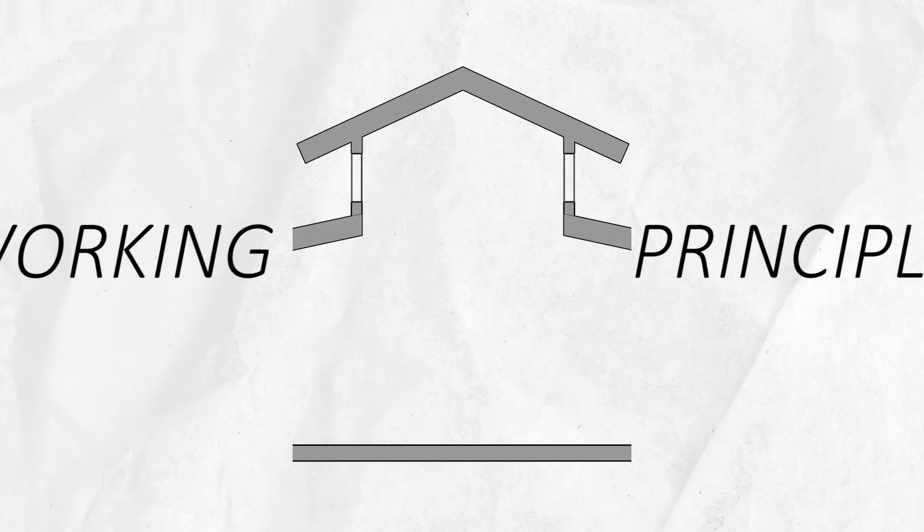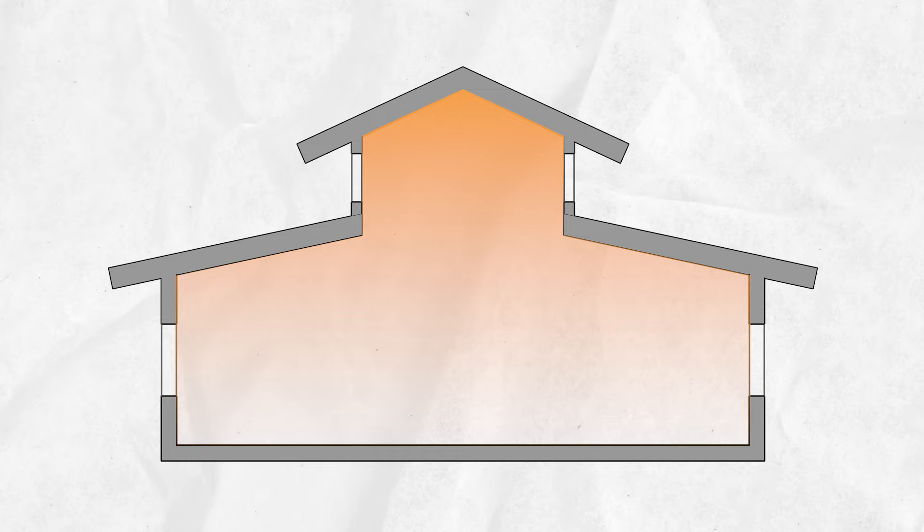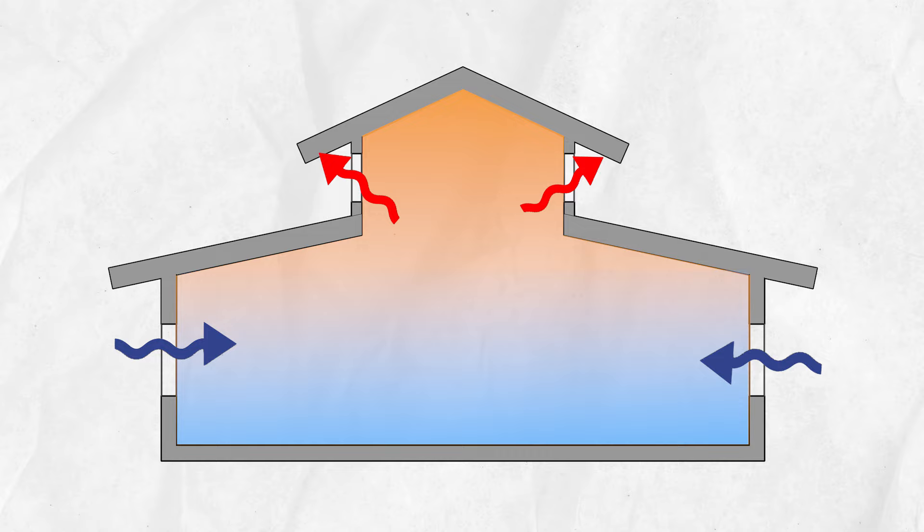The principle of natural ventilation is based on the stack effect. When the temperature goes up inside the room, the air heats up and becomes hot air, which goes upward because hot air is lighter. It tries to escape from the opening in higher places, and the vacant space is replaced by cool air coming from the windward side opening.